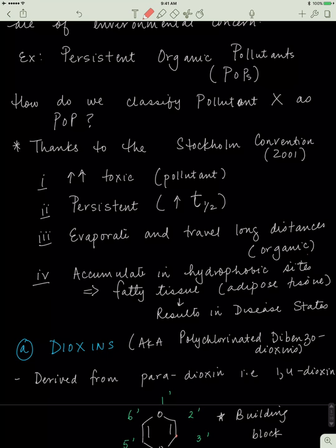How do we classify a pollutant X, any pollutant that we've identified in the lab, as a POP or persistent organic pollutant? Well, the Stockholm Convention asked this question and delivered a wonderful answer. They say that for something to be a POP, it has to meet four criteria.